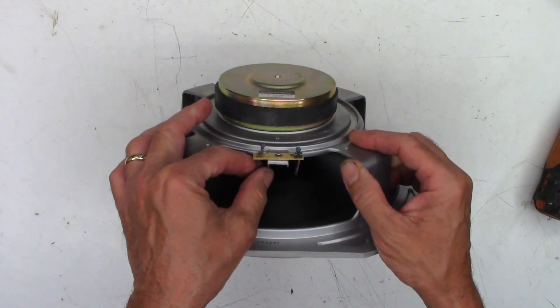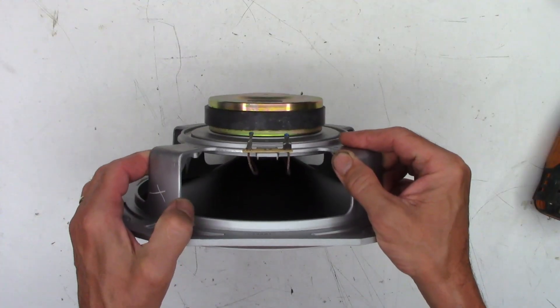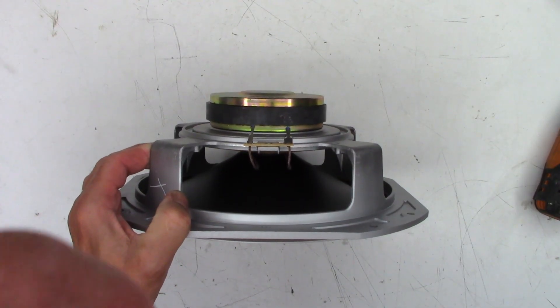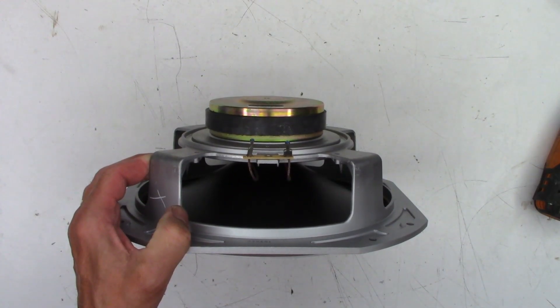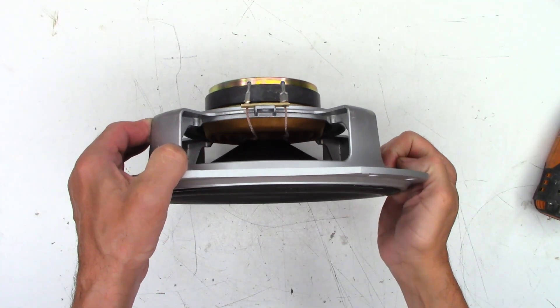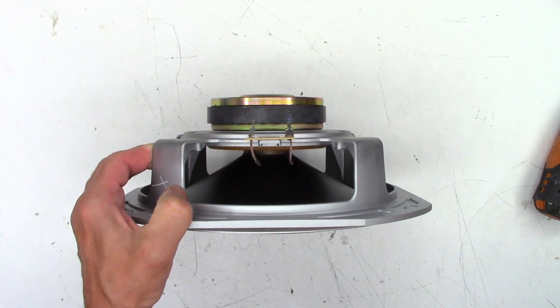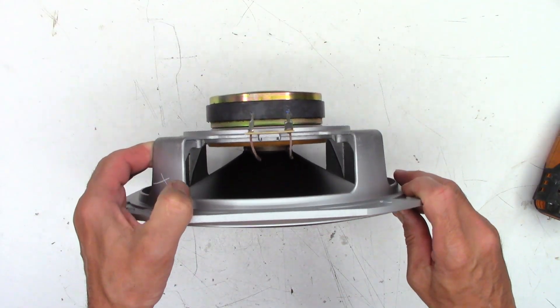Normally what I'll do is unsolder the leads right here and maybe I should try to pump up the exposure just a tad so you guys can see it better. Okay, that should be totally washed out. So, I'm going to heat up the soldering iron and unsolder the leads.